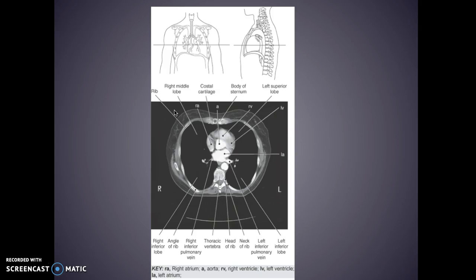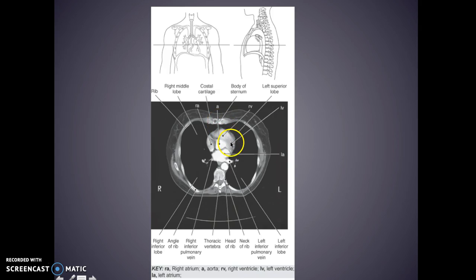This PowerPoint has a lot to it — there's a lot to the chest, so memorize, memorize, memorize. When we're looking at an axial CT post-contrast, we'll start up top with your costal cartilage and we have your aorta right here in the middle with the body of your sternum, your right ventricle, your left ventricle, and your left atrium.